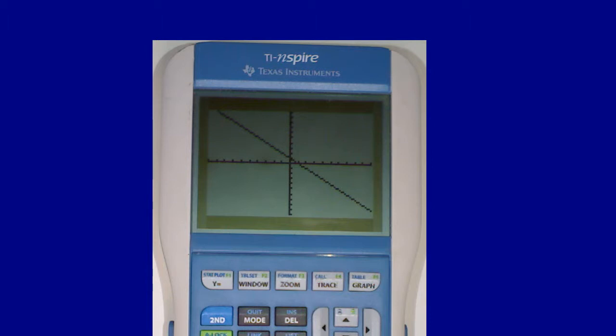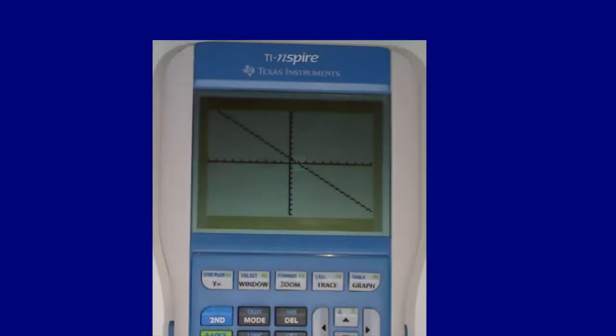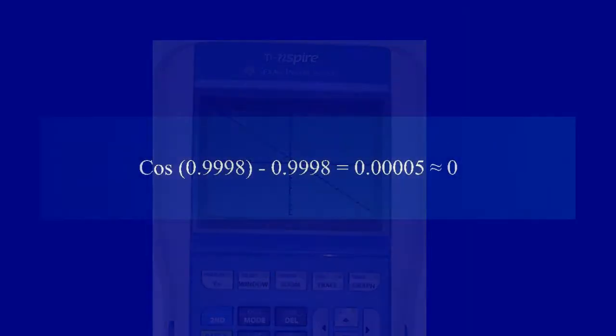We can verify this by looking at a graphical representation of the equation. The only value that will make this equation equal to zero is 0.9998. Plugging this value back into the equation will show that it is the correct solution.